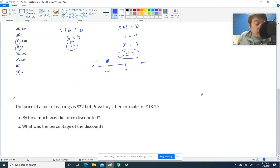The price of a pair of earrings is $22, but Priya buys them on sale for $13.20. How much was the price discounted? Set up a table: percent versus dollar amount. The 100% price before the discount was $22. The price after the discount was $13.20. Let's divide $22 by $100, which is really easy. That's $0.22 as our constant of proportionality.